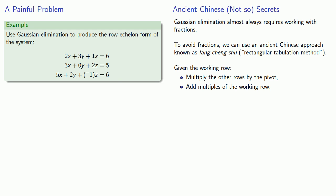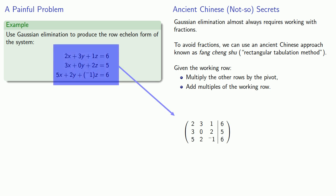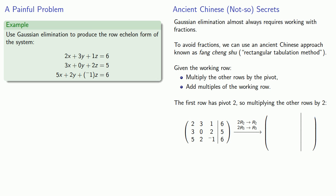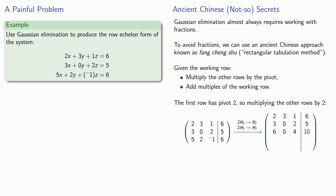Since we're already in standard form, that's just a matter of transcribing the coefficients and constants. The first row has pivot 2, so we'll multiply all the other rows by 2. So our first row remains unchanged. The second row was 3, 0, 2, 5. So if we multiply it by 2, we get 6, 0,